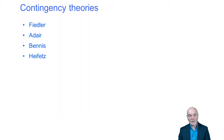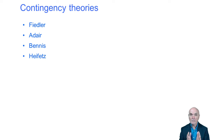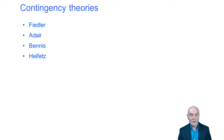Then we have contingency theories. Contingency theories are quite the opposite from classical management theory. Classical management theory said there is a right way, a set of golden rules for managing. Contingency theories of leaders say there is no right way — it depends on the people, the task, the resources and so on. We need to be flexible in our leadership styles. You need to know the main keywords associated with these writers.